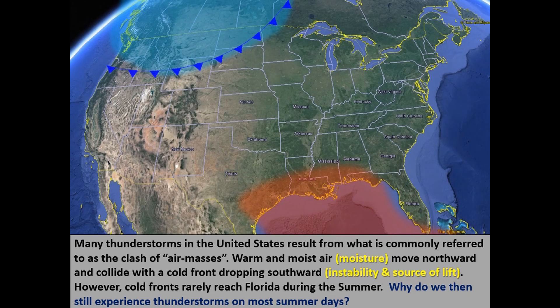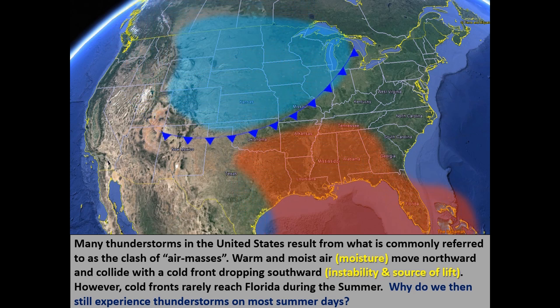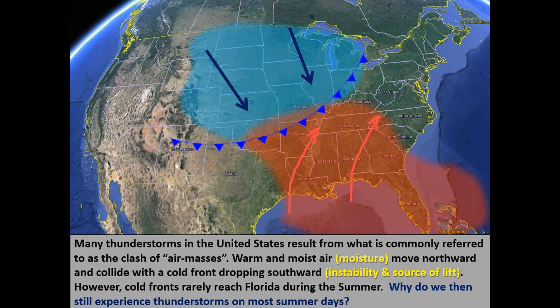Many thunderstorms in the United States result from what is commonly referred to as the clash of the air masses. Warm and moist air moves northward and collides with a cold front dropping southward. However, cold fronts rarely, if ever, reach Florida during the summer.